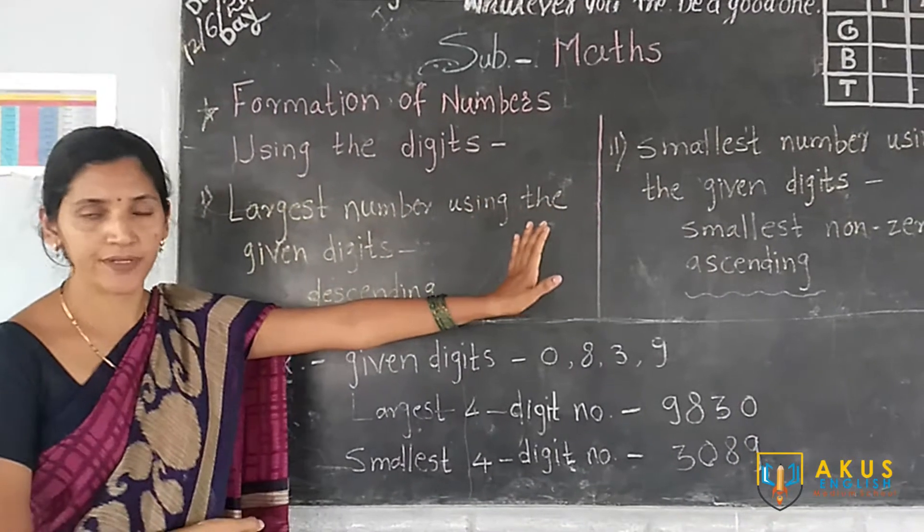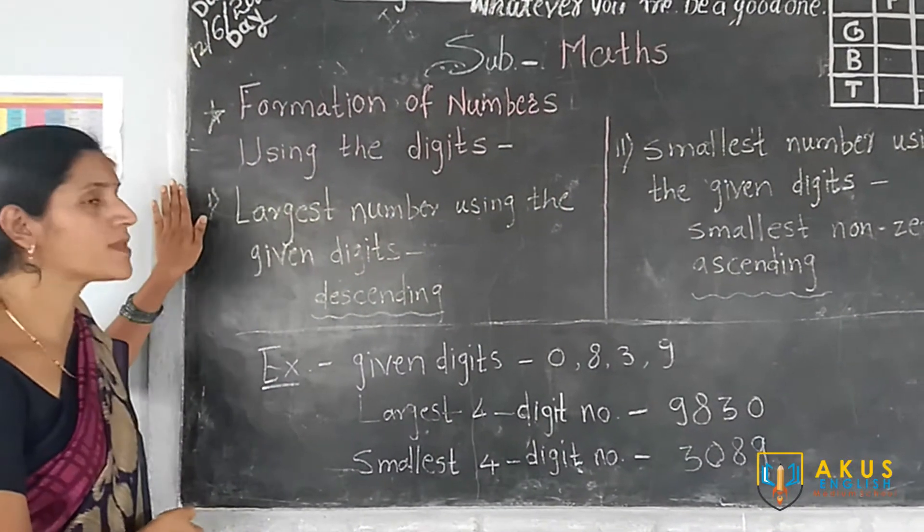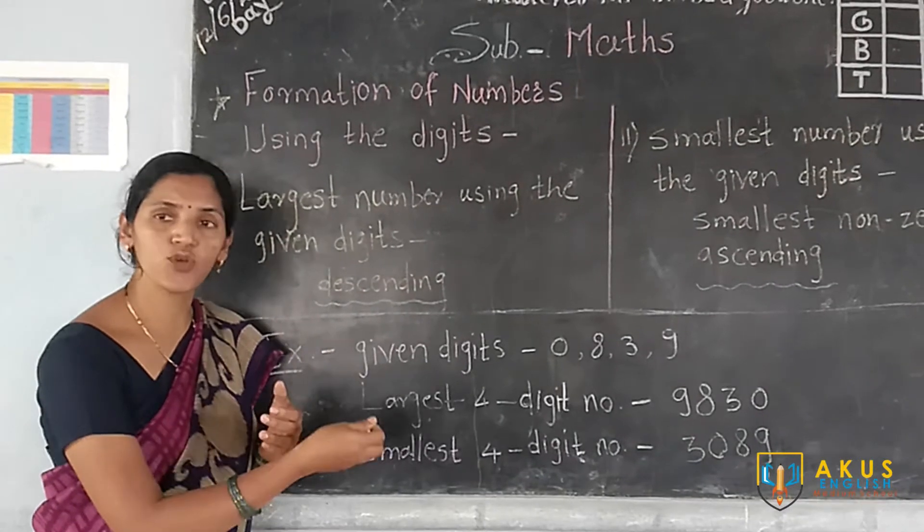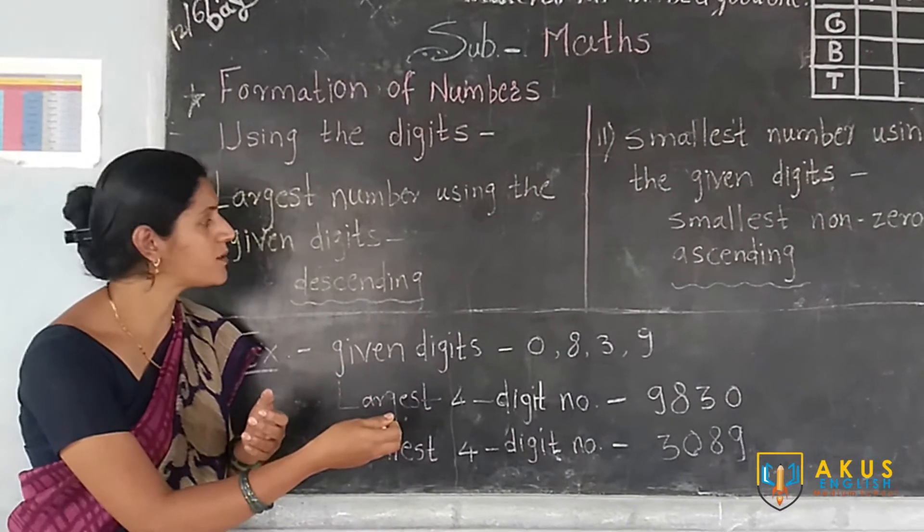Now, which kind of number do you have to form — the largest or greatest number using the digits, and the smallest or least number using the given digits. Each digit you have to use once only. To form the largest number, you simply arrange the given digits in descending order.